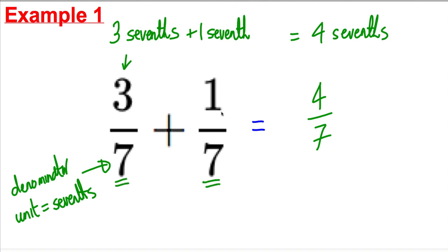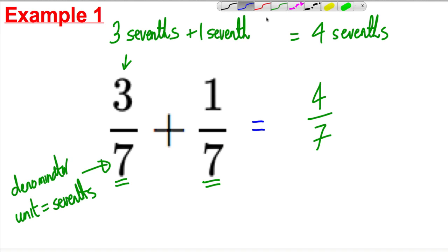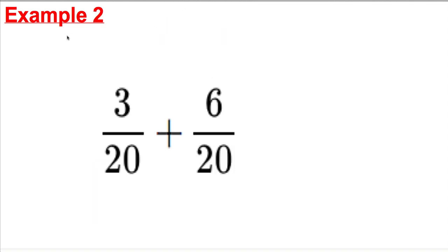Three sevenths plus one seventh must equal four sevenths. When the numbers on the bottom of fractions are the same, when we're adding we can just add the tops — because it's like three pounds plus one pound is four pounds. Here we have three sevenths plus one seventh, which must be four sevenths.